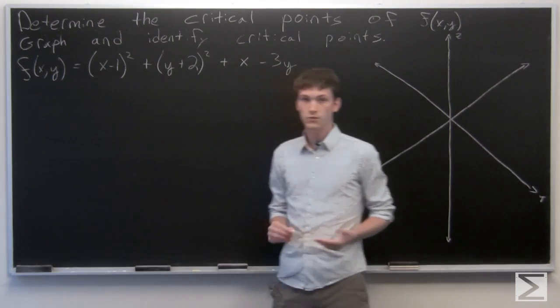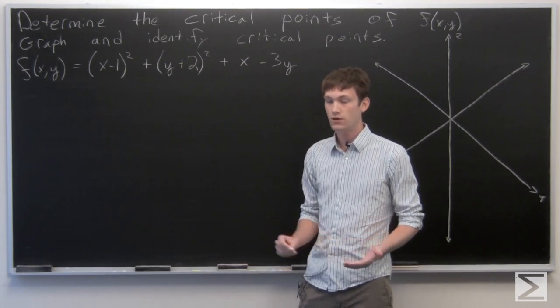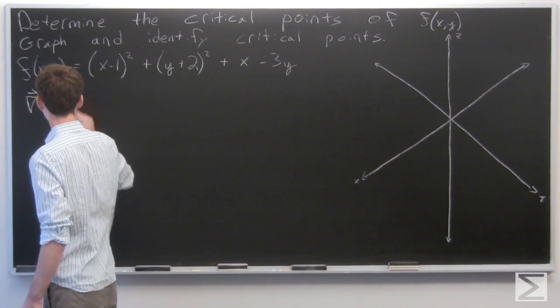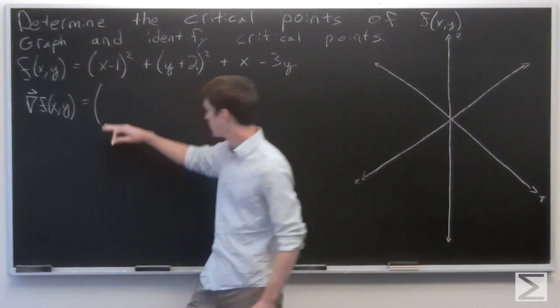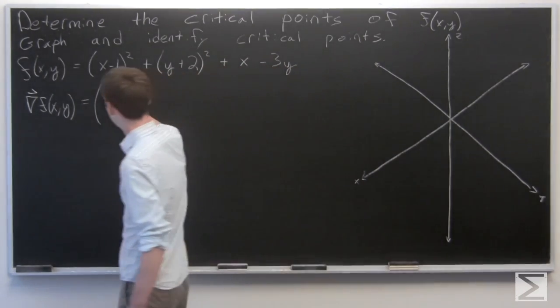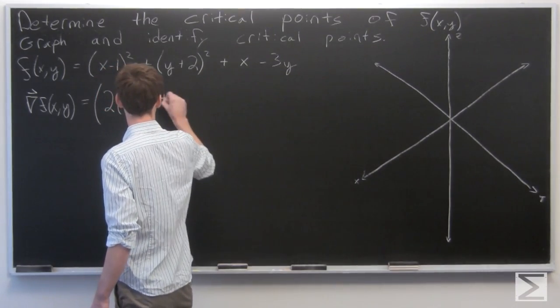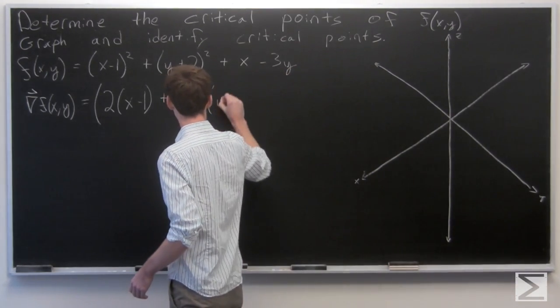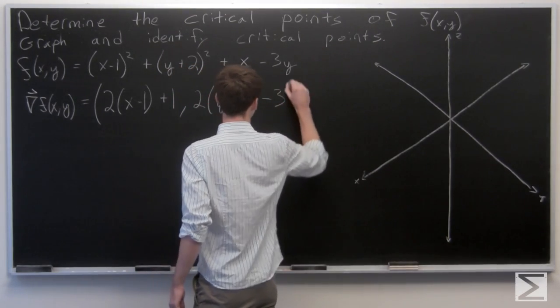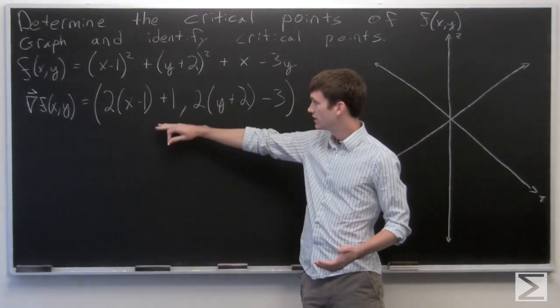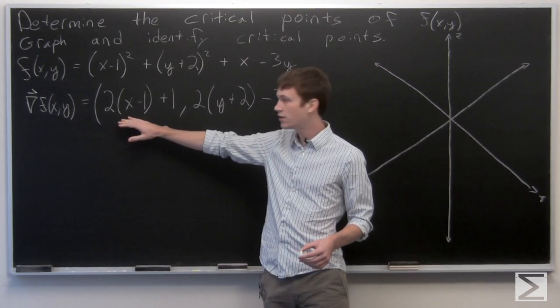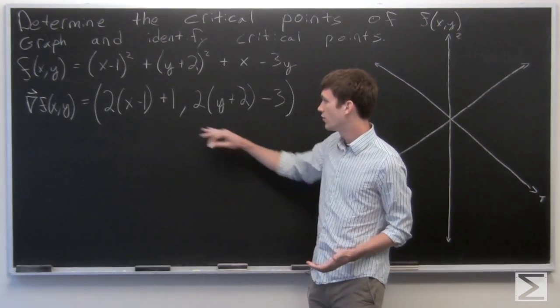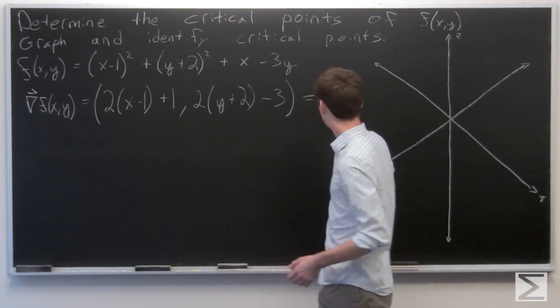To determine the critical points, we'll take the gradient vector of f and set it equal to 0. The gradient of f, first component is the partial derivative of f with respect to x, second component is the partial derivative with respect to y. And we see that our gradient is 2 times the quantity (x-1) plus 1, comma, 2 times the quantity (y+2) minus 3. We want to set this equal to 0 to determine our critical points.